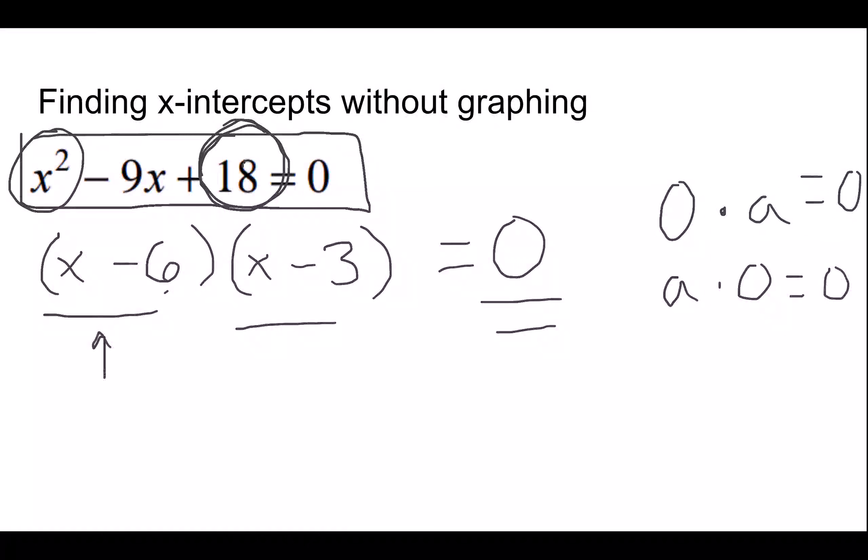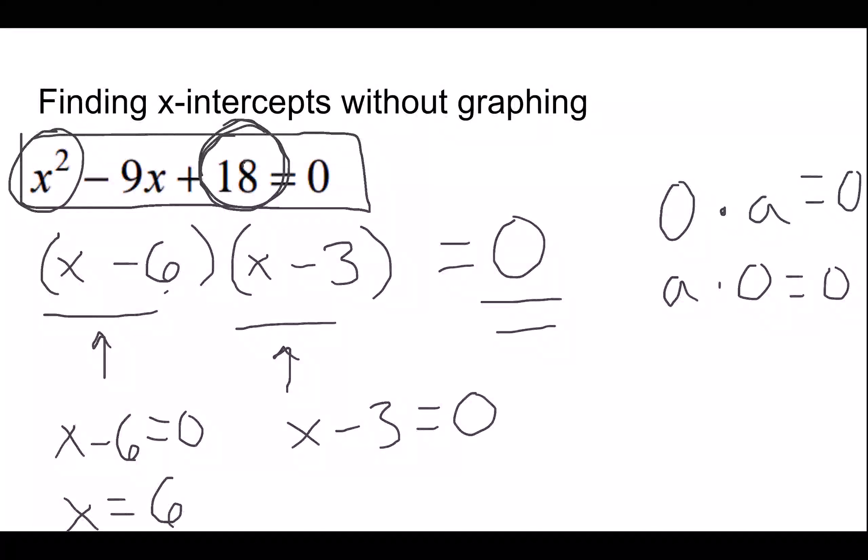So either this thing is 0 or this thing is 0. So either x minus 6 is equal to 0 or x minus 3 is equal to 0. Well, that would just mean that x is equal to 6 or x is equal to 3.